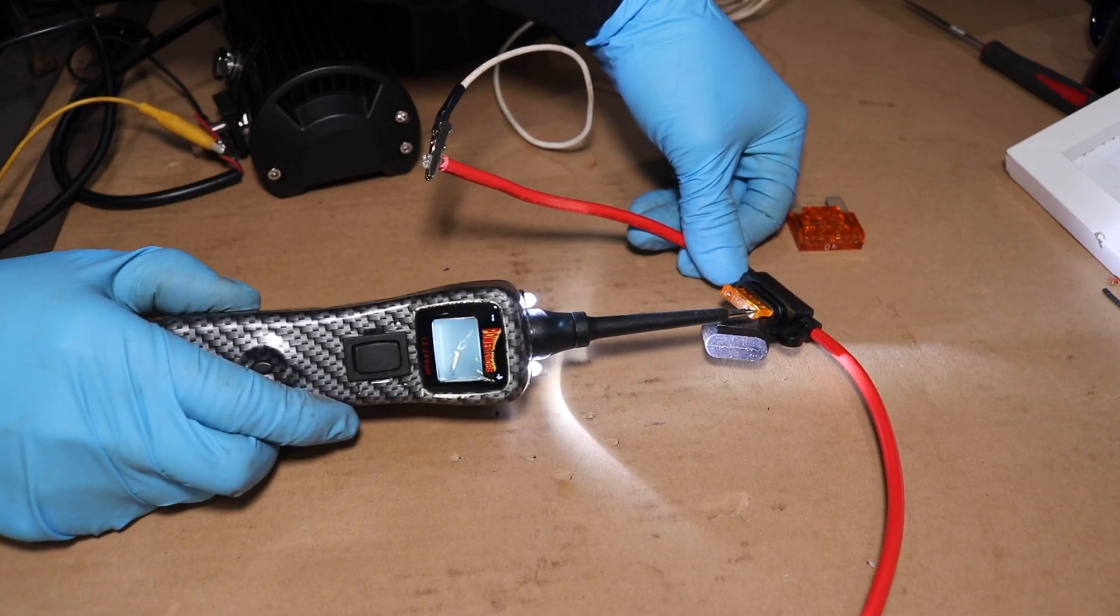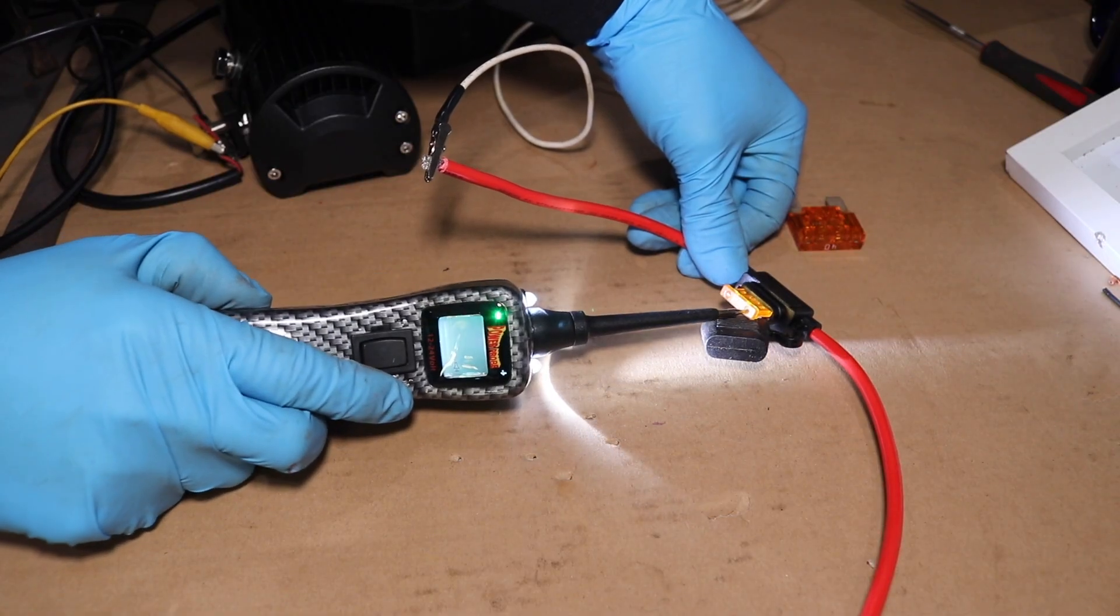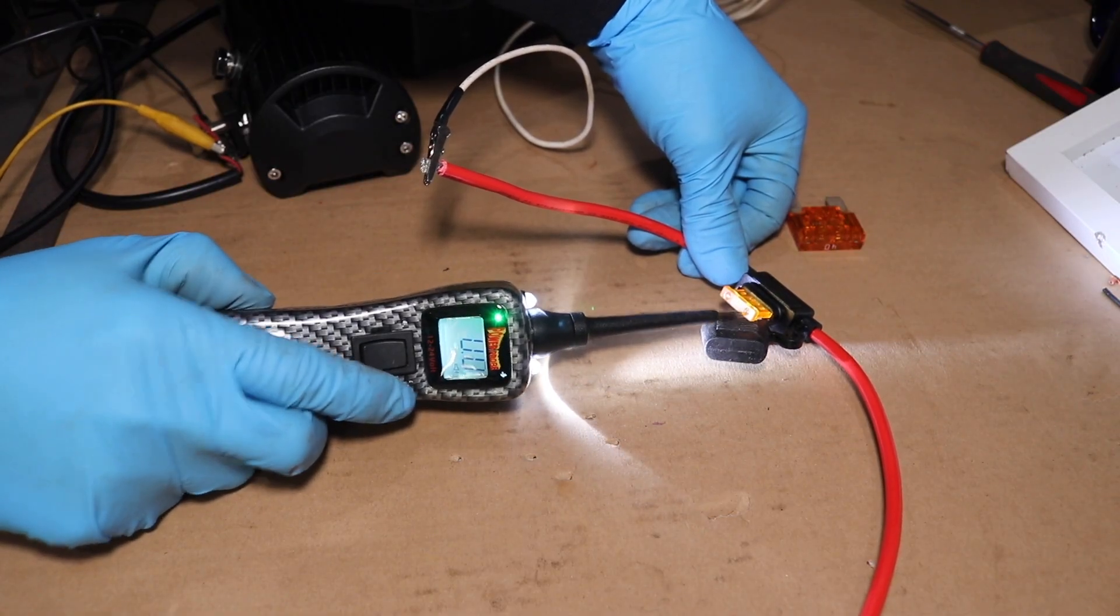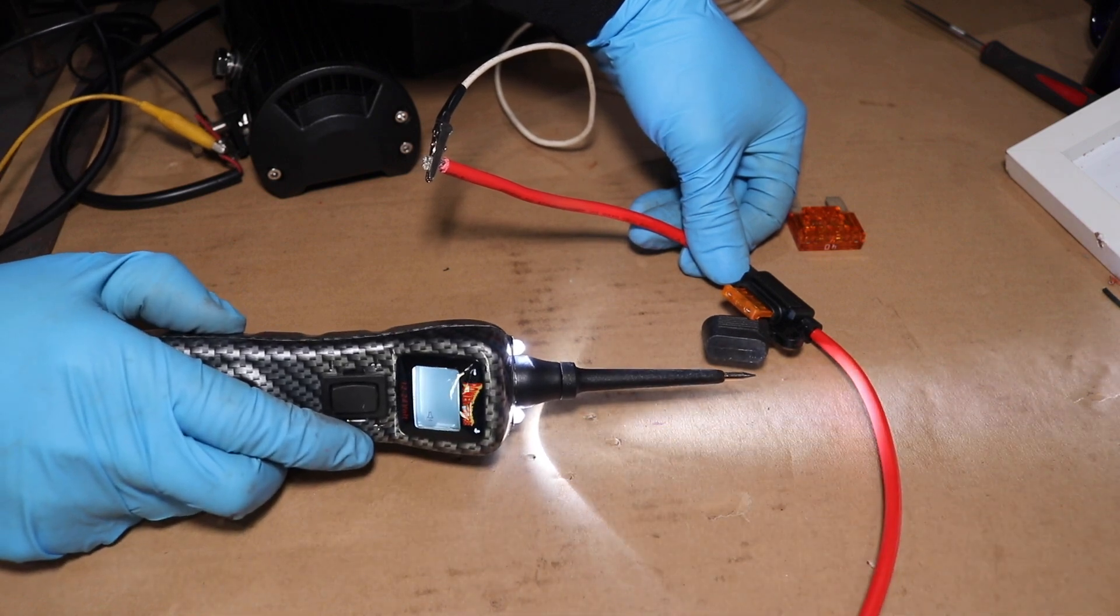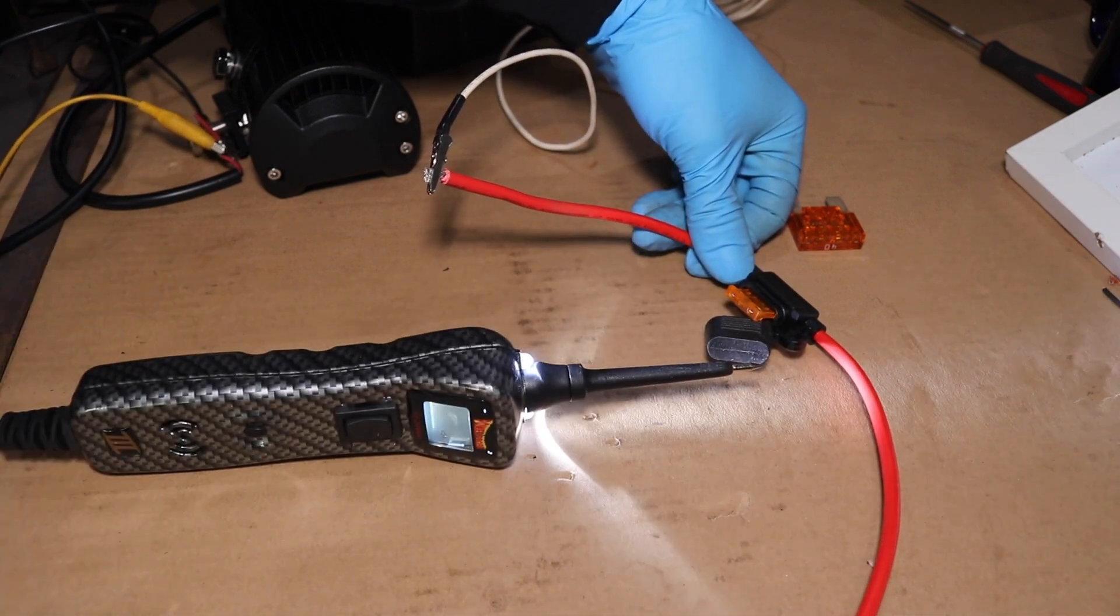We're getting that lower pitch sound, green arrow, zero volts. So we have a direct short on the component side of this fuse. Let's investigate. Let's see if we can track down this short.